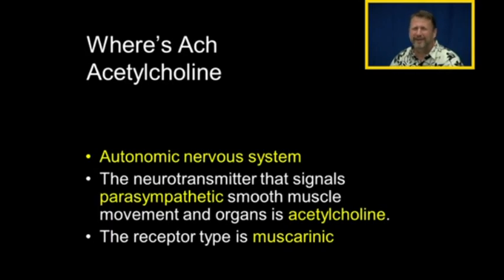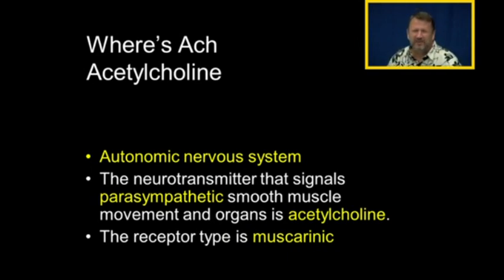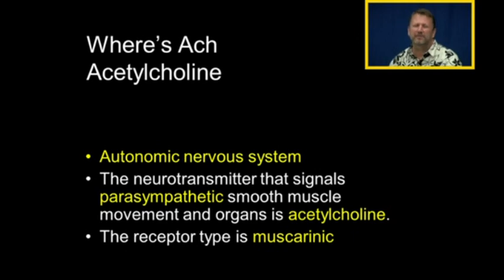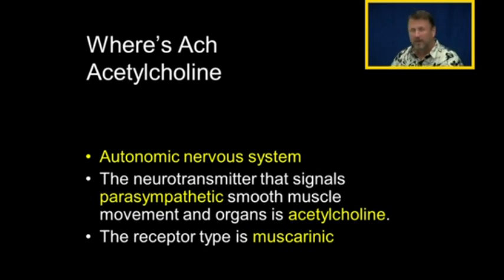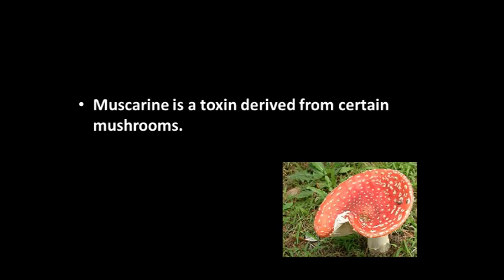We'll see acetylcholine in the autonomic nervous system, which we'll discuss next time. The neurotransmitter that signals parasympathetic smooth muscle movement at the organs is acetylcholine, and the receptor type is muscarinic. They're called muscarinic receptors because of their high affinity to muscarine, which is a toxin. In this class, you won't need to know the different subtypes of muscarinic receptors.